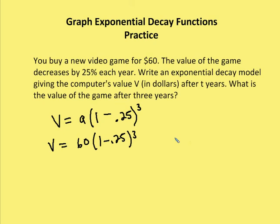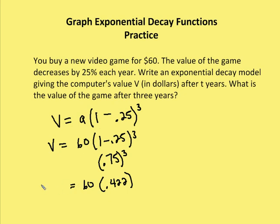Working through the calculation: first the parentheses, 1 − 0.25 = 0.75. Then the exponent: 0.75^3 ≈ 0.422. Then multiplication: 60 × 0.422 ≈ $25.30. So three years later the game is worth about $25.30 — you've lost $35 over those three years. Like the car example, this is not an appreciating asset.